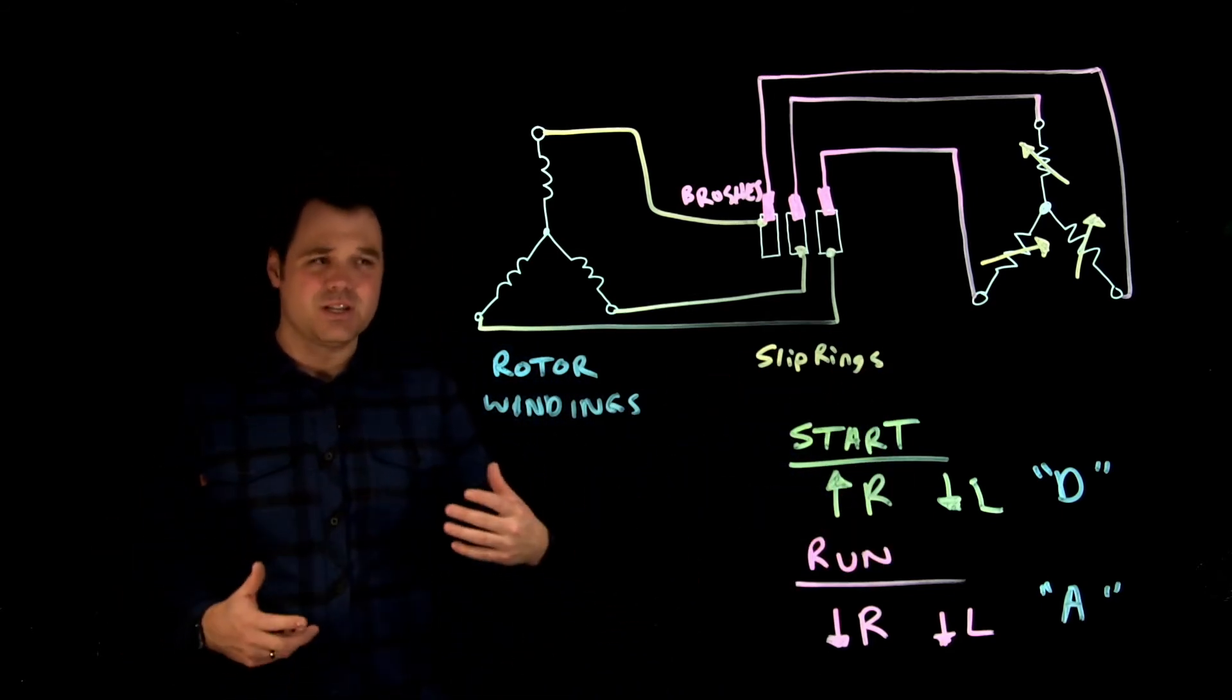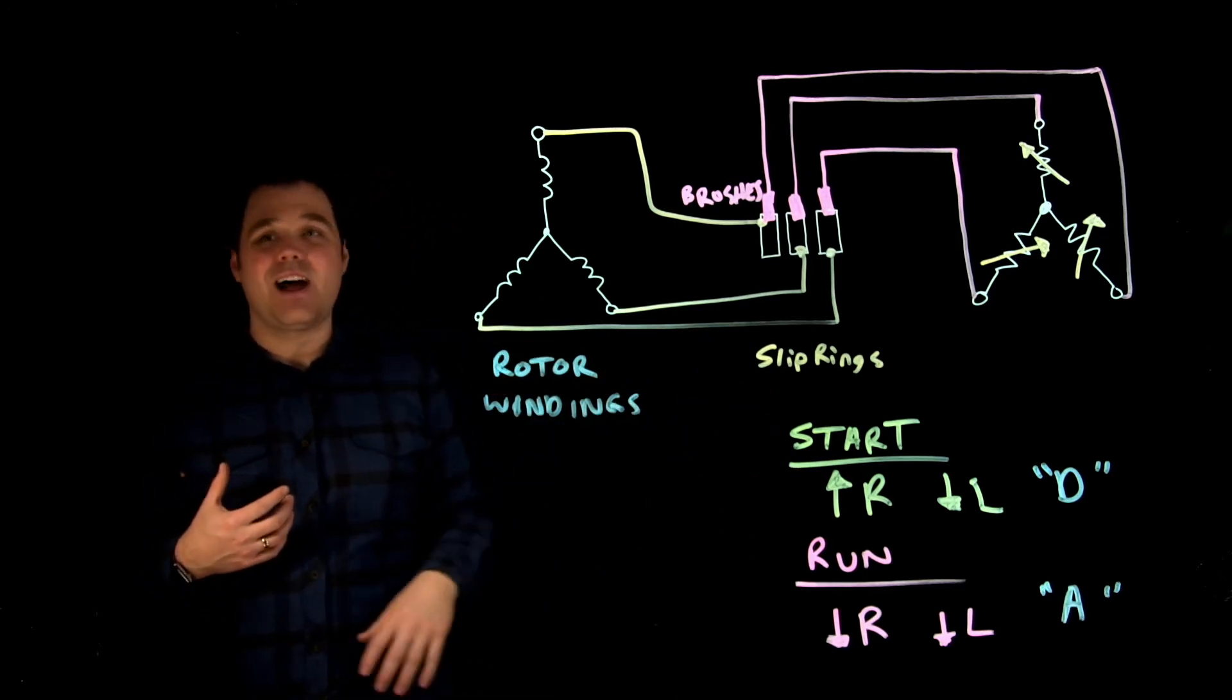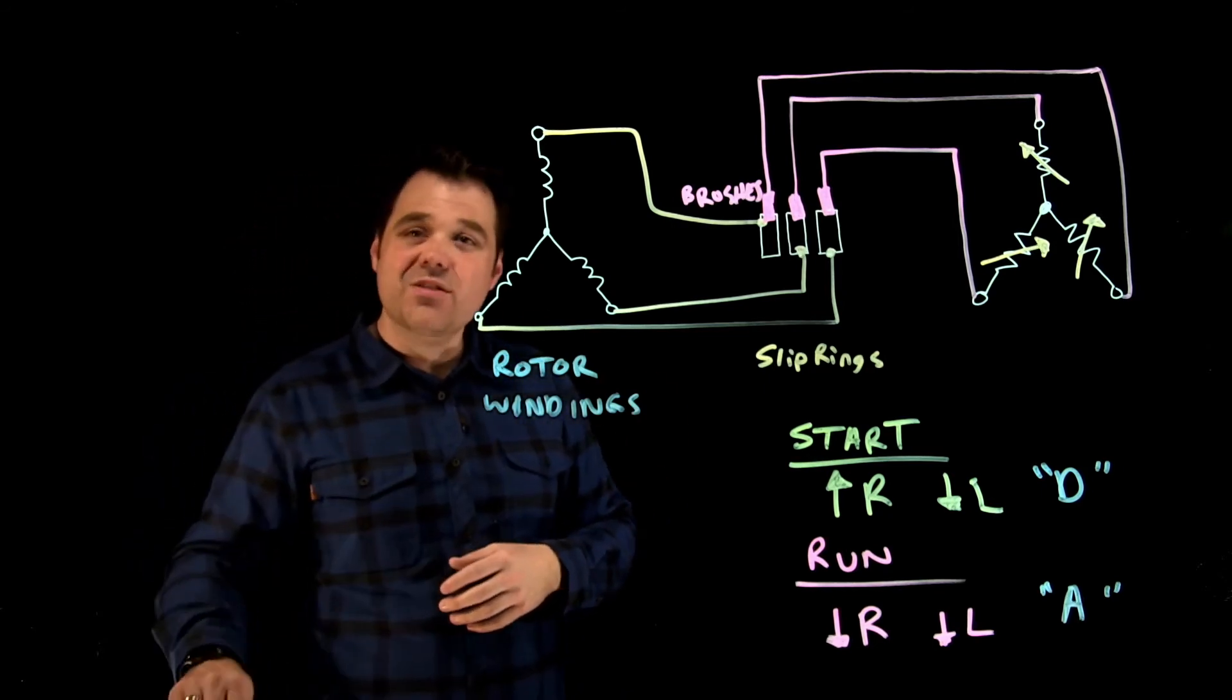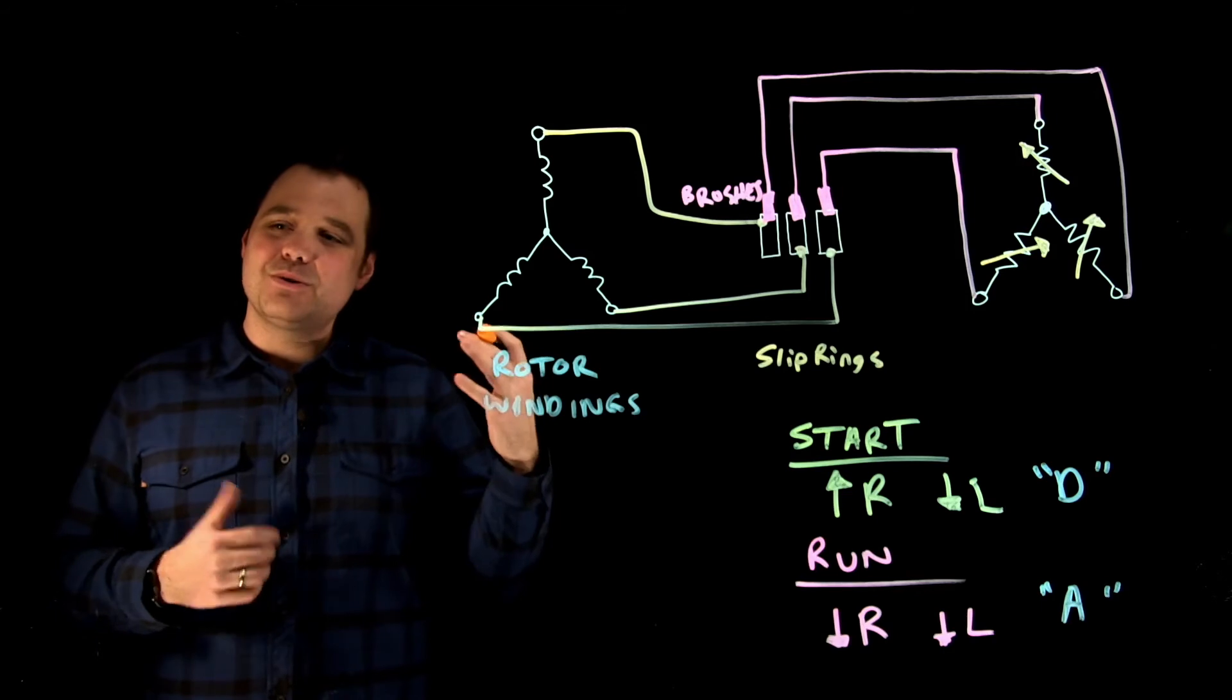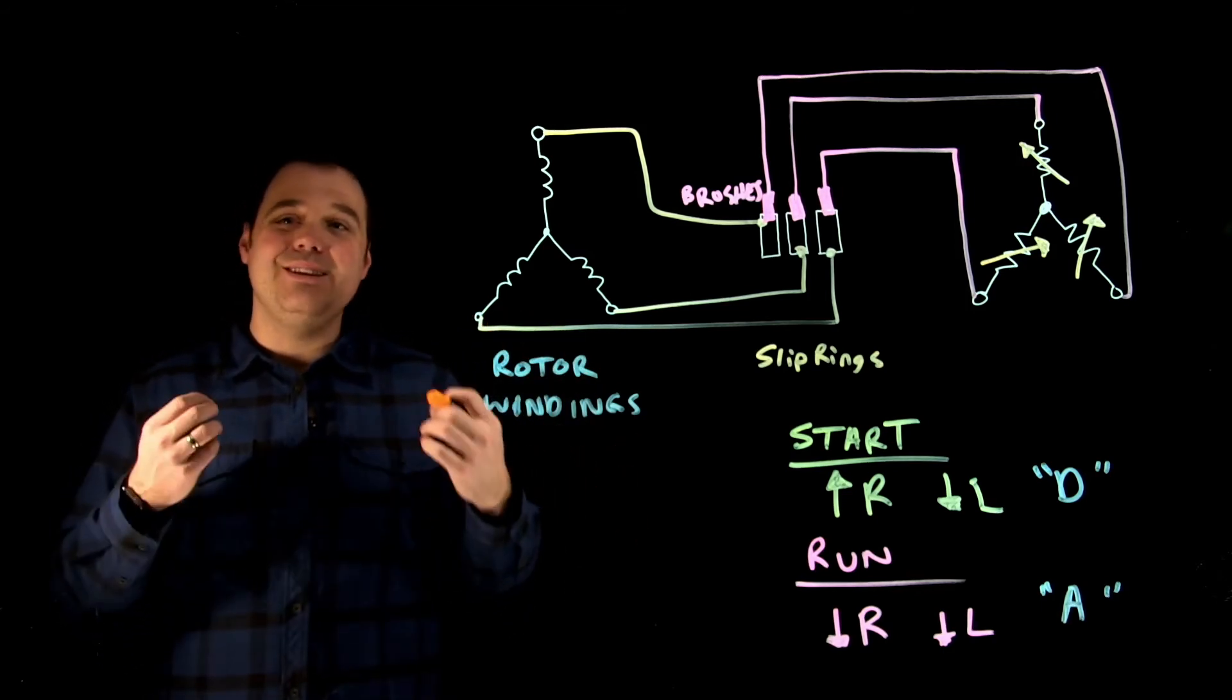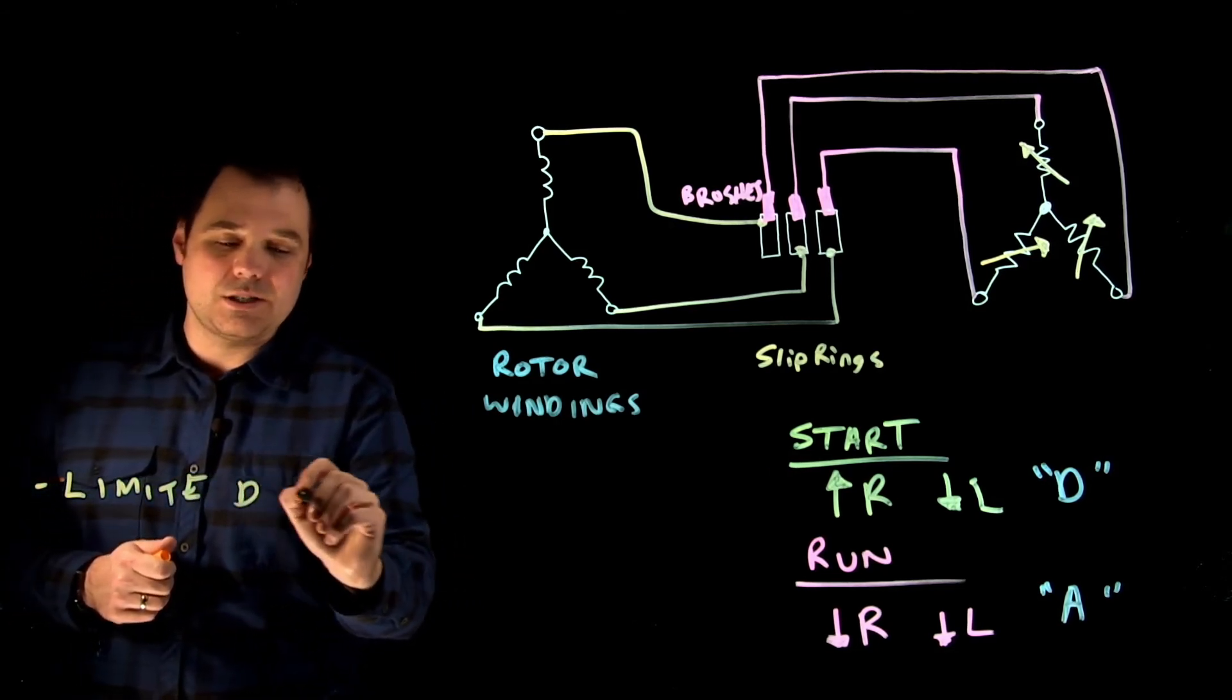So those are some big disadvantages, which is why we see these a little bit less often nowadays. But they still exist, they still have that high torque, there's still a lot of them around. Now one other cool thing is it's not common anymore, with VFDs now speed controls very easy. But you used to be able to use a wound rotor induction motor for limited speed control. So that was something you could do with them is limited speed control.